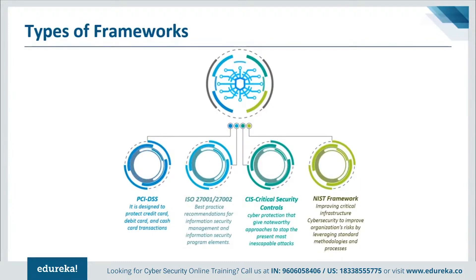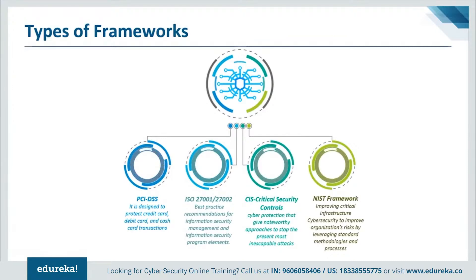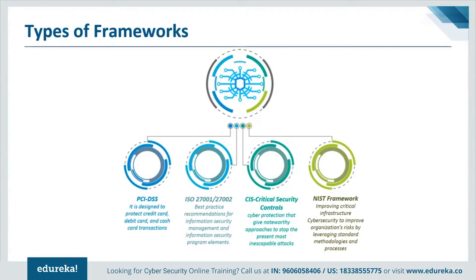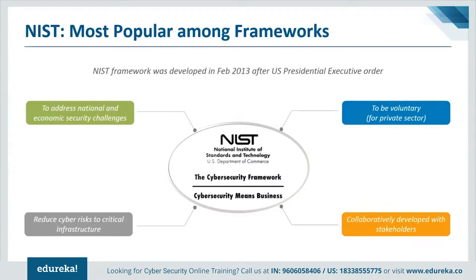The third type of framework is CIS, which stands for Critical Security Controls — a prescribed arrangement of activities for cyber protection that gives specific and noteworthy approaches to stop the most prevalent and dangerous attacks. A key advantage of the controls is that they prioritize and focus on fewer activities with high outcomes. Last but not least, we have the NIST framework, made for improving critical infrastructure cybersecurity with a goal to improve an organization's readiness for managing cybersecurity risk by leveraging standard methodologies and processes. This is the most popular framework, developed in February 2013 after the US presidential executive order, designed to address national and economic challenges and intended to be voluntary for private sectors.